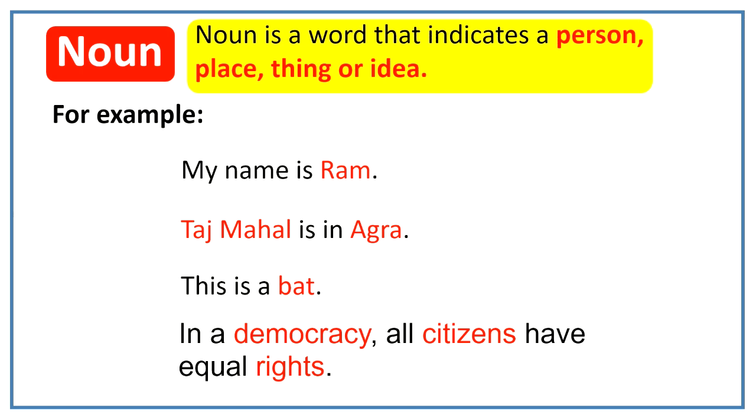Here in these examples we can see Ram indicates a person. Taj Mahal indicates a monument. Agra indicates a place. Bed indicates a thing. Democracy and rights indicate ideas.